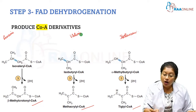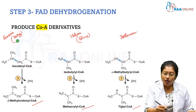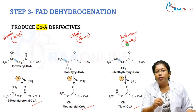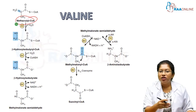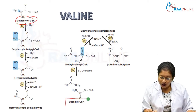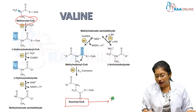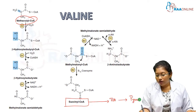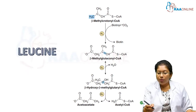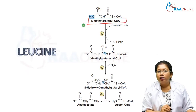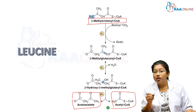Valine is glucogenic, leucine is purely ketogenic, and isoleucine is both glucogenic and ketogenic. In the valine pathway, methyl acrylyl CoA undergoes a series of reactions to give succinyl CoA — a very important compound. When succinyl CoA enters into the TCA cycle, it gives pyruvate, which is a glucogenic substance. For leucine, beta methyl crotonyl CoA undergoes a series of reactions and ultimately ends in acetoacetate and acetyl CoA, meaning it is ketogenic.